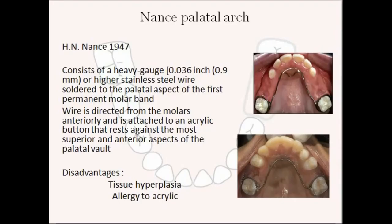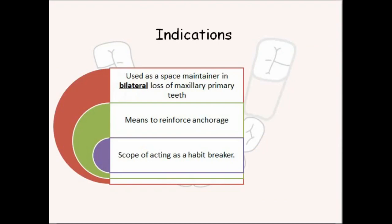The Nance palatal arch was introduced by H. Nance in 1947. It consists of a heavy gauge wire — either 0.9 mm or 1 mm — running from one first permanent molar to the other along the palatal aspect. The wire is directed anteriorly from the molars where an acrylic button is attached to the palate. A disadvantage is that the acrylic button can cause tissue irritation or hypoplasia, and it is contraindicated when the patient is allergic to acrylic. Indications include maintaining space when there is bilateral loss of maxillary primary teeth, reinforcing anchorage, and it can also act as a habit breaker.